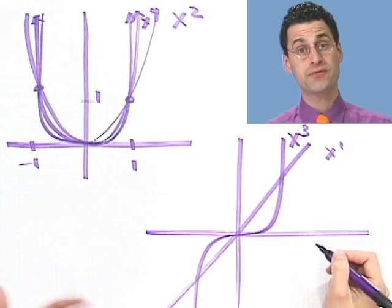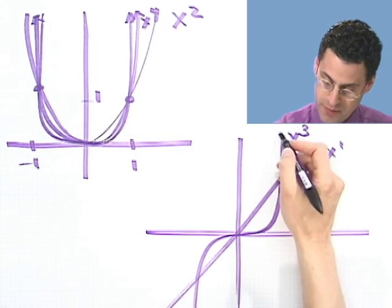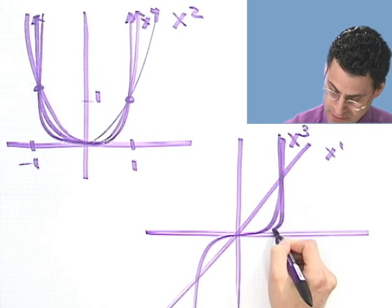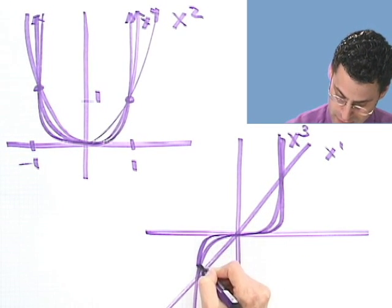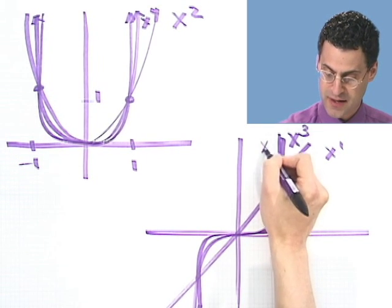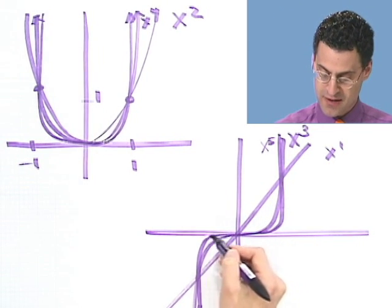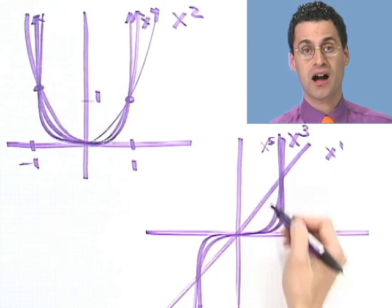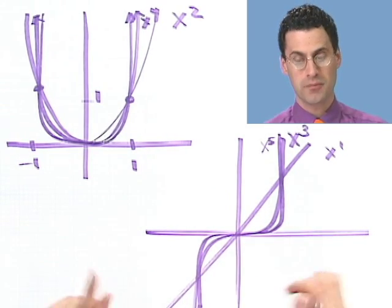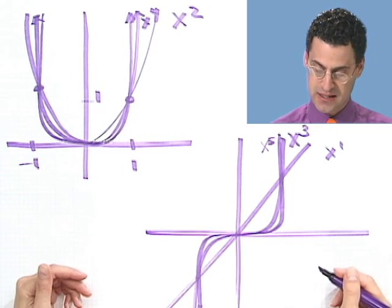What does x to the fifth look like? It's the same kind of thing going on as with x cubed — same basic shape, but just sharper. It's going to start a little taller and then come down faster. So that's x to the fifth. What we can see we're heading toward is something that looks very sharp, coming down like this. The higher the degree, the tighter it gets around those corners, but always very smooth — never sharp, because it's a polynomial.